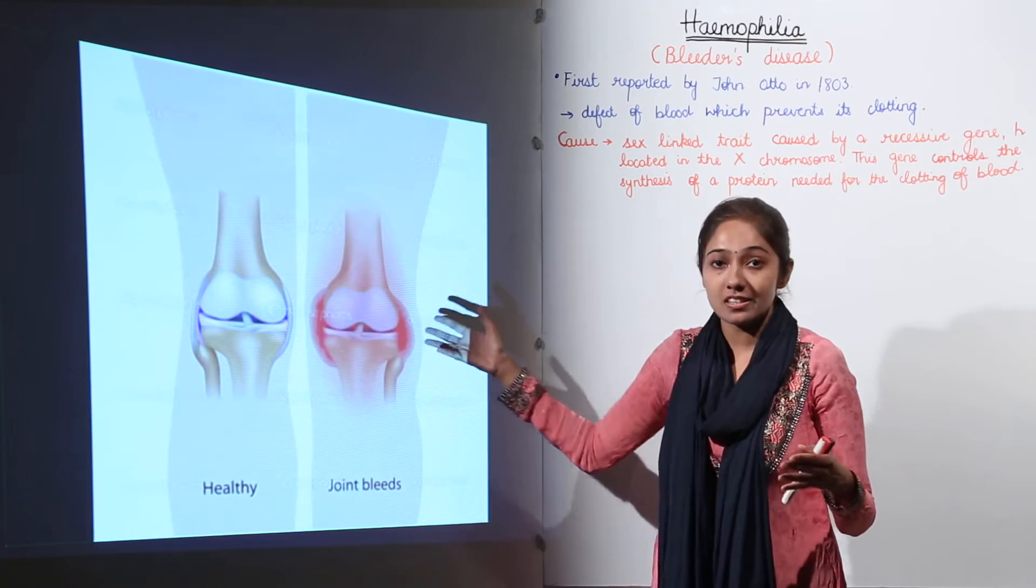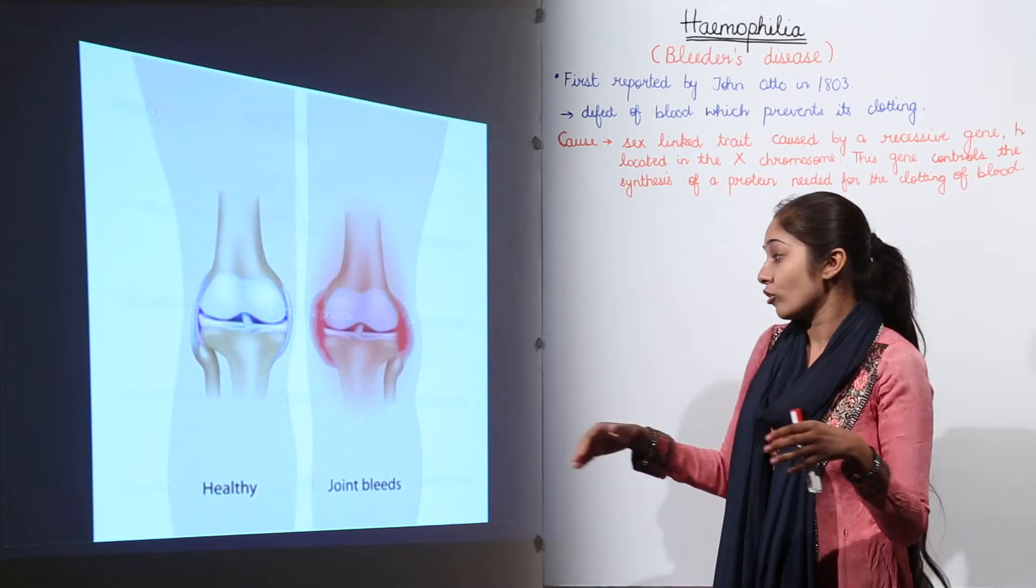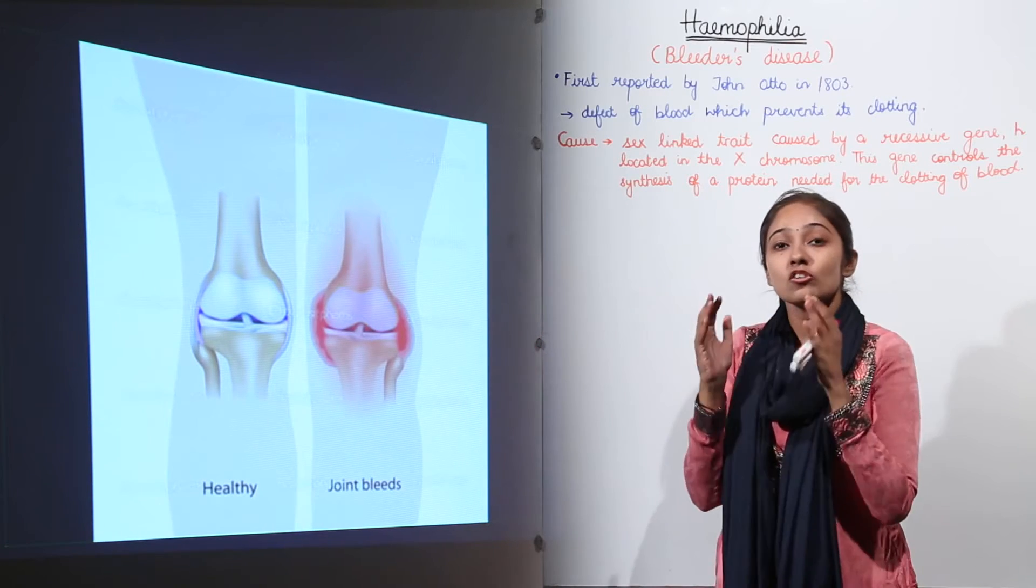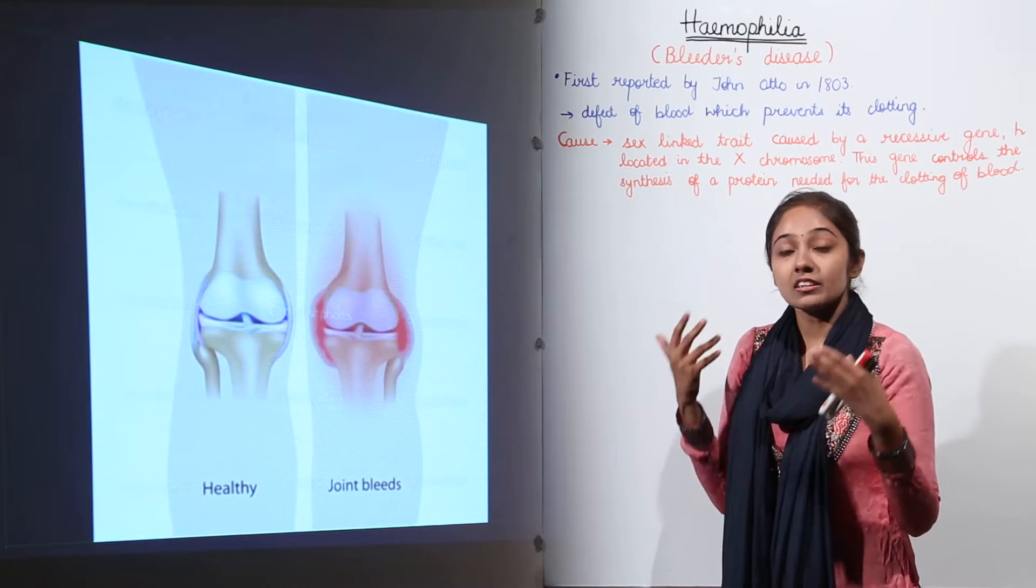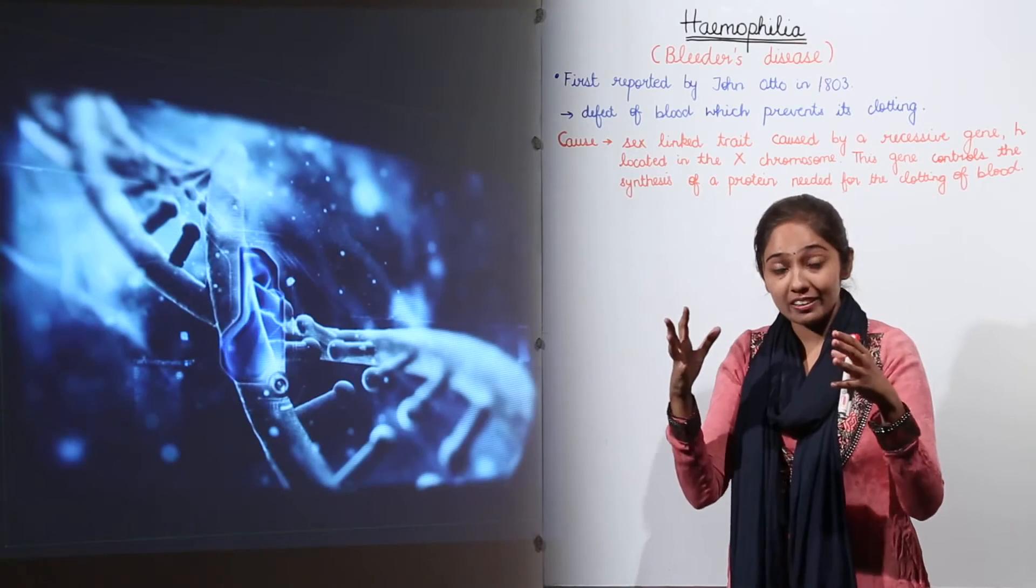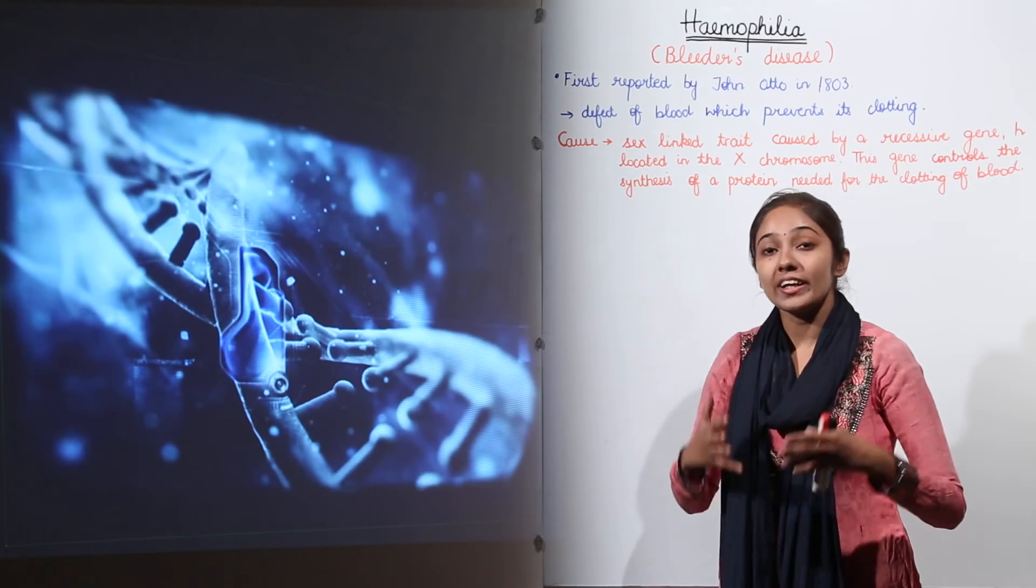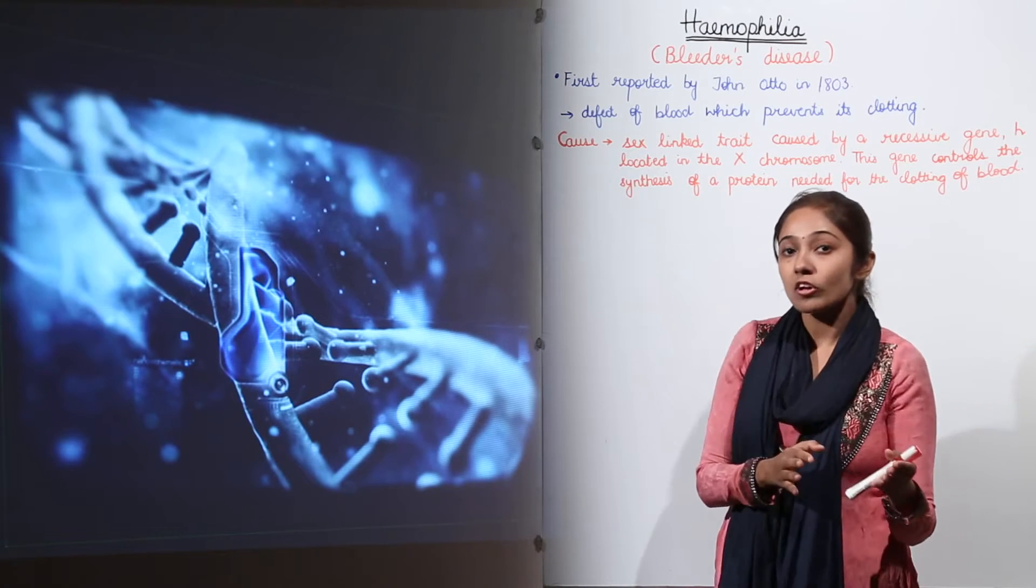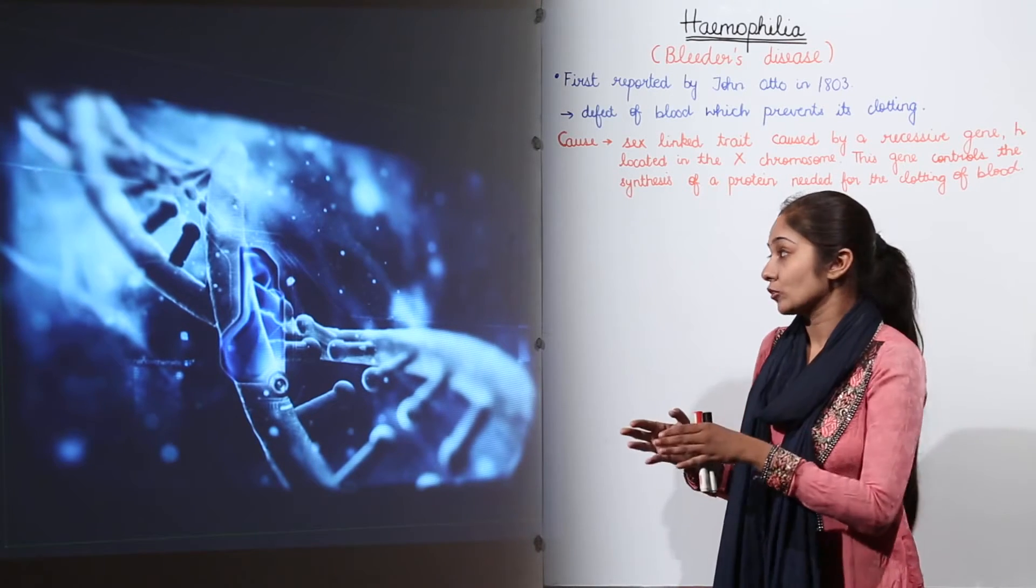The internal bleeding, if it is in the case of these joints, this can cause severe pain. If this internal bleeding is in case of brain, then this can be fatal, quite deadly. So this bleeding can be internal also and it can be external also.